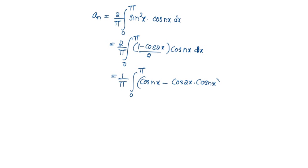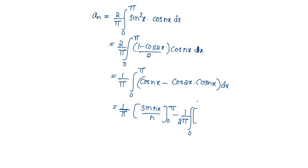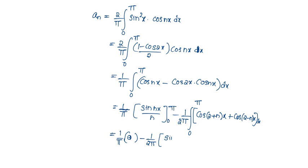The first part integrates as sinnx/n from 0 to π, which gives 0. For the second part, we use the product-to-sum formula, dividing and multiplying by 2: (1/2)[cos(2+n)x + cos(2-n)x]. Integrating gives sin(2+n)x/(2+n) + sin(2-n)x/(2-n), evaluated from 0 to π. This is valid only for n ≠ 2, and applying limits gives 0.